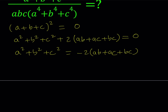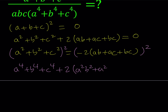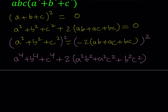Since I want to get to a to the 4th plus b to the 4th plus c to the 4th — the sum of 4th powers — I'd like to take this expression and square it. So let's go ahead and square both sides. If I square both sides, I'm going to be getting a squared plus b squared plus c squared all squared equal to a to the 4th plus b to the 4th plus c to the 4th, plus 2 times the quantity a squared b squared plus a squared c squared plus b squared c squared. And on the right-hand side, we're going to be getting 4 times the quantity ab plus ac plus bc, squared.